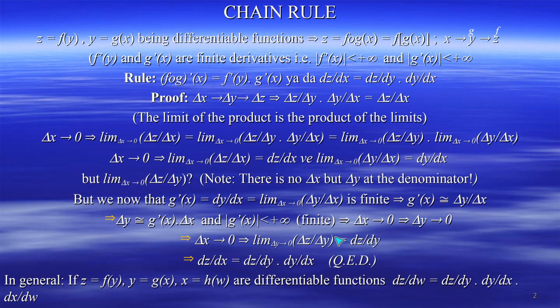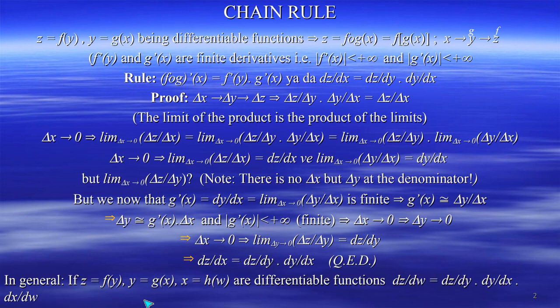Therefore dz/dx equals dz/dy times dy/dx — which is exactly what we wanted to prove. Quod erat demonstrandum. The proof is complete. In general, I can generalize to more than two functions: if Z equals F of Y, Y equals G of X, and X equals H of W, all differentiable with finite derivatives, then dz/dw equals dz/dy times dy/dx times dx/dw, and so on for any number of functions.